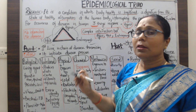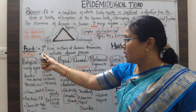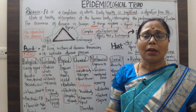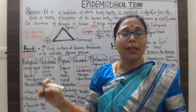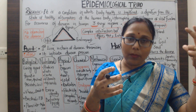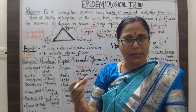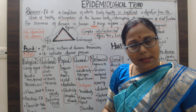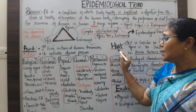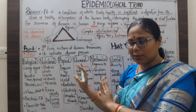The agent is the cause — it is also called the first link in the chain of disease transmission. It initiates the disease process. An agent may be a living or non-living thing that affects our health conditions. Agents are categorized as: biological agents, nutritional agents, physical agents, chemical agents, mechanical agents, and social agents.